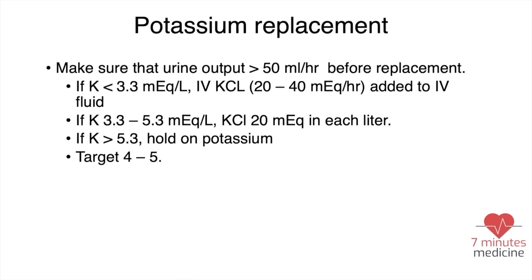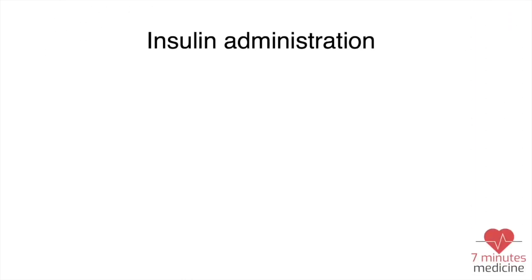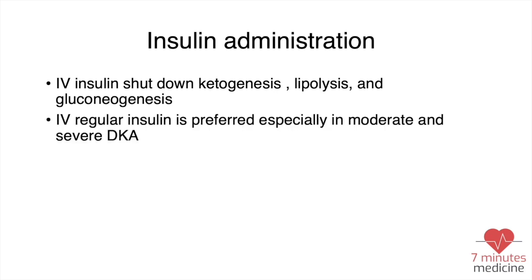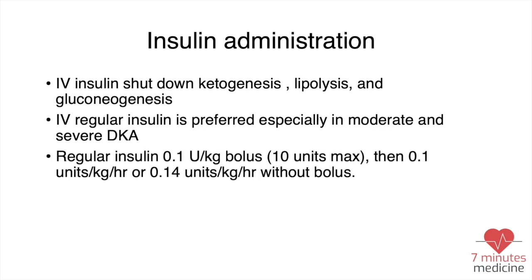For insulin administration, we give insulin to shut down ketogenesis, lipolysis, and gluconeogenesis. IV regular insulin is preferred in moderate and severe DKA. Some protocols, especially during COVID, proposed subcutaneous short-acting insulin instead, but it is not highly recommended in moderate or severe DKA. We give a regular insulin bolus of 0.1 units per kilogram (max 10 units), then an infusion of 0.1 to 0.14 units per kilogram per hour.